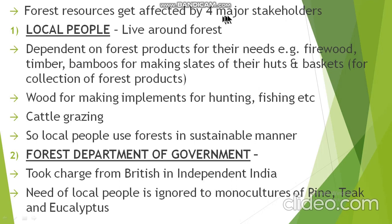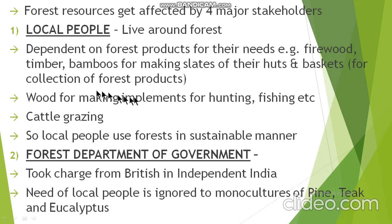Forest resources are affected by four major stakeholders. The first is the local people — those who live in the forest and are dependent on forest products for their needs. They get firewood, timber for making implements used in hunting and fishing, bamboo for making slates for their huts and baskets. Their living depends upon the forest. They also rear cattle and depend on the forest for cattle grazing. Local people are very much aware that they must conserve the forest, so they use it in a sustainable manner.